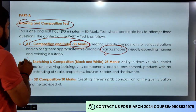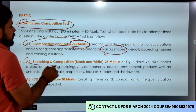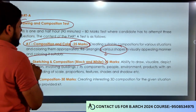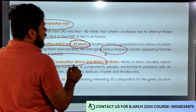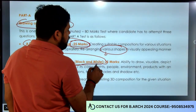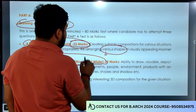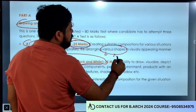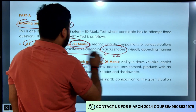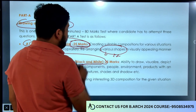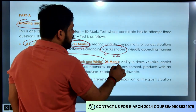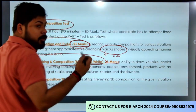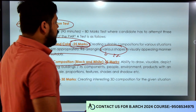दूसरा जो हमारा part है, दूसरा जो हमारा form है - इसमें आपको black and white और color का use करना है। ये 25 नंबर का question है। अगले जो 25 नंबर के हैं, जिसमें perspective है।